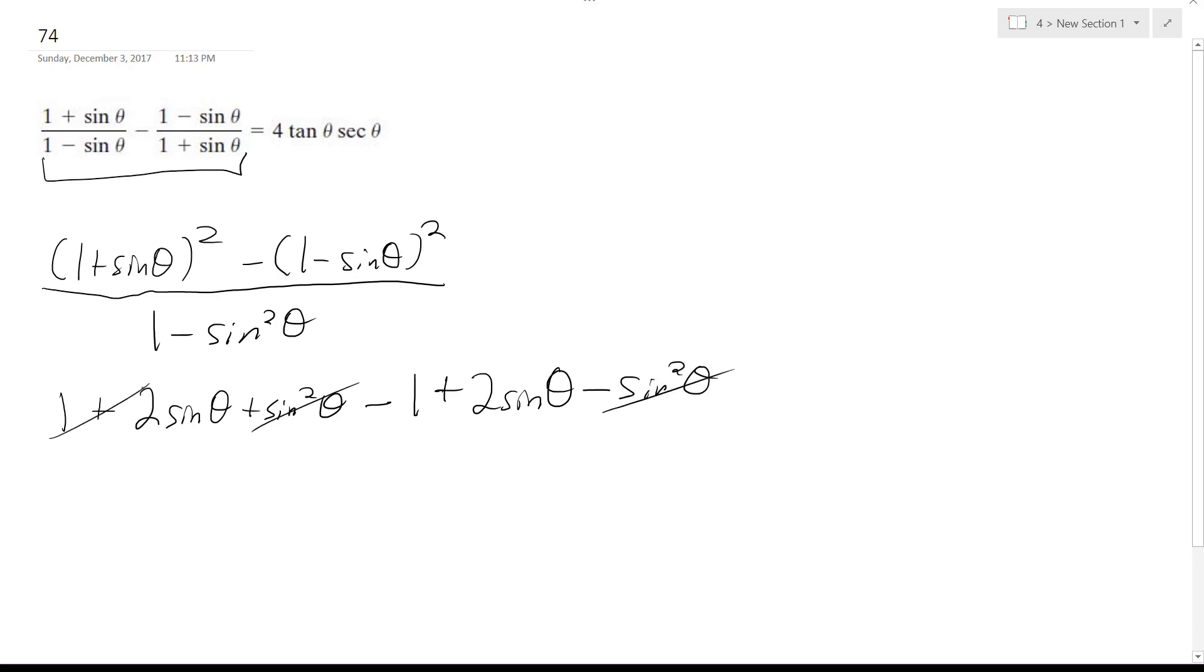So the sines cancel out, the 1s cancel out, and we're left with 4 sine theta.